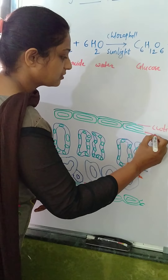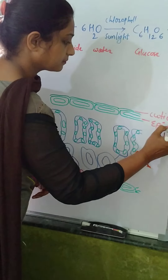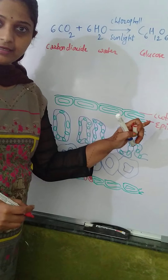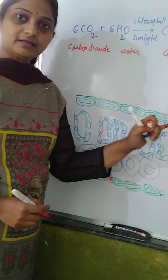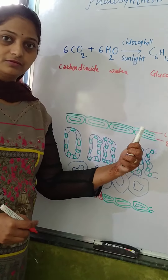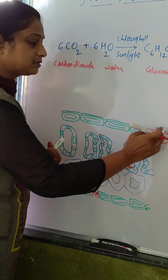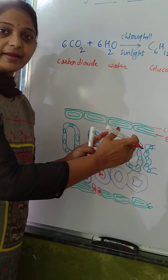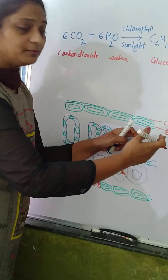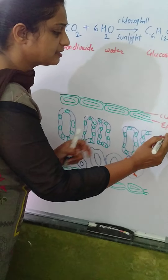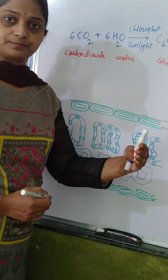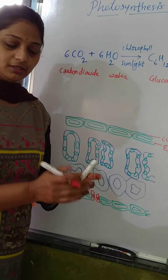This layer is called the epidermis. The cuticle is the waxy layer and it prevents excessive evaporation from the plant, from the leaves. It also provides protection from mechanical damage. Exactly below the cuticle, what is present? That is the epidermis.